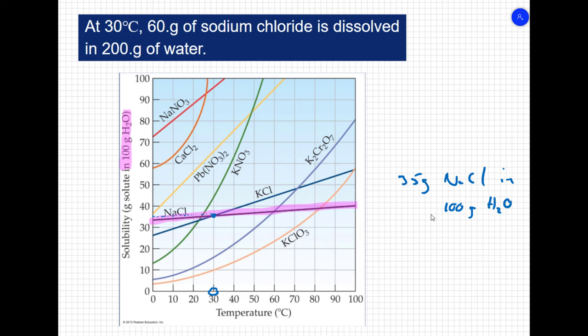The question is about 200 grams of water. So if I can put 35 grams of NaCl in 100 grams of water, I should be able to put 70 grams of NaCl in 200 grams of water. The question, however, says that I've got 60 grams of sodium chloride.